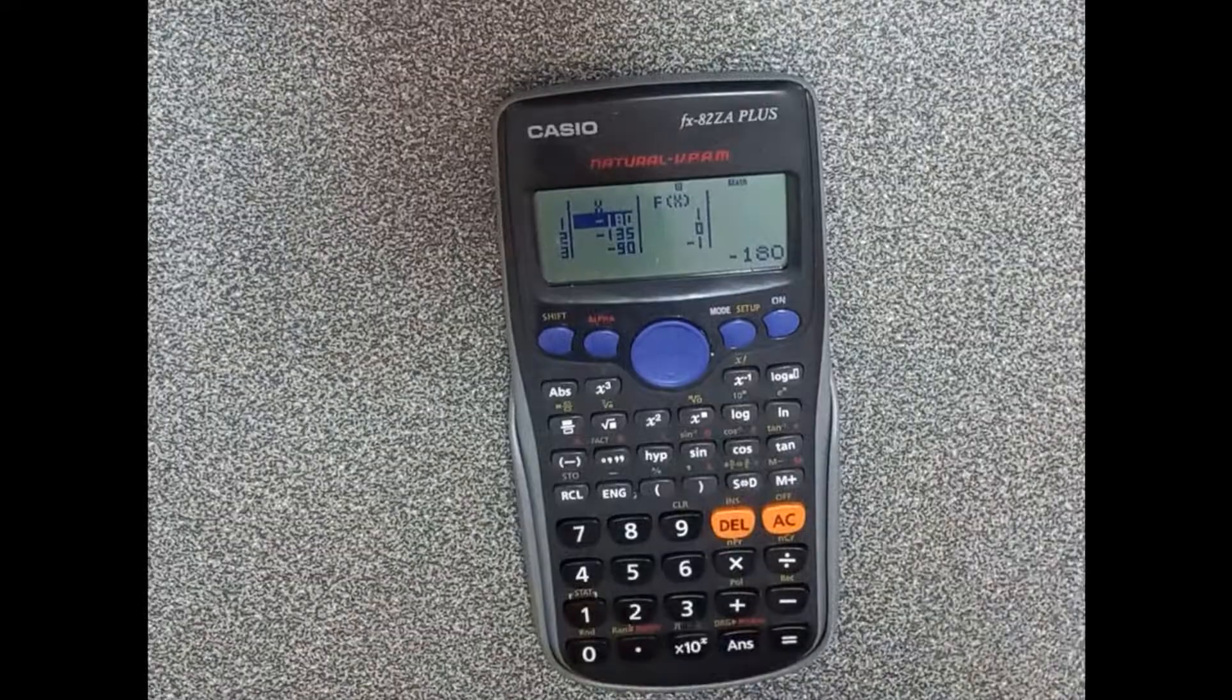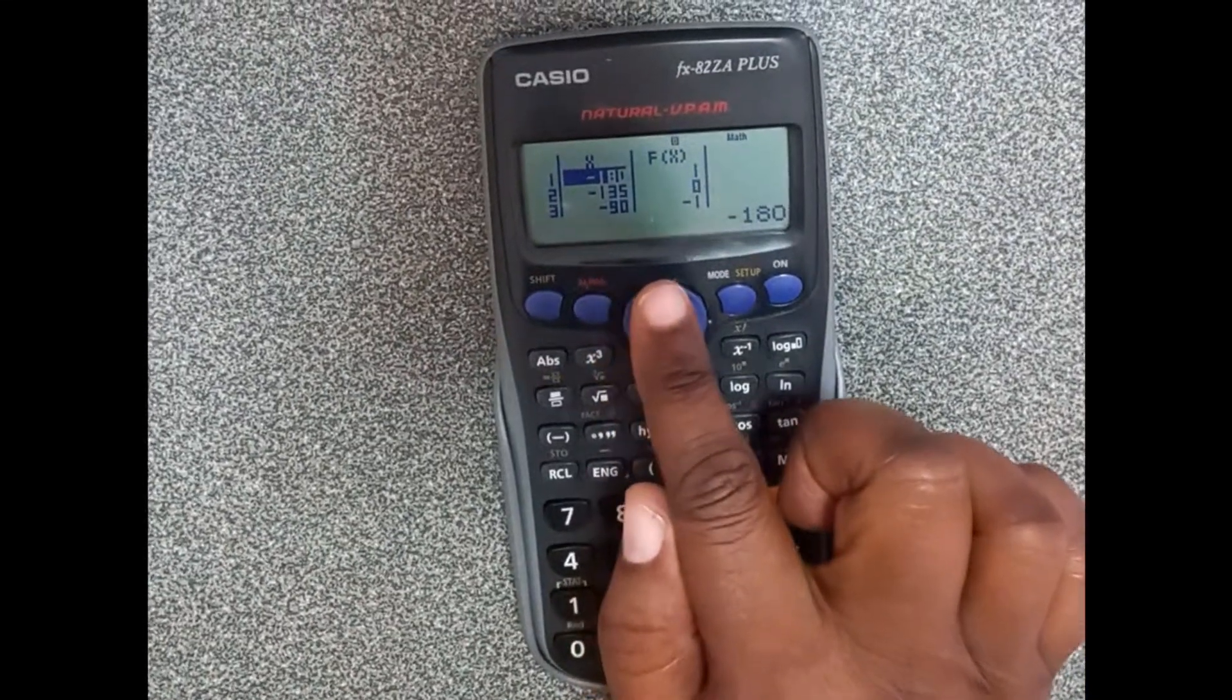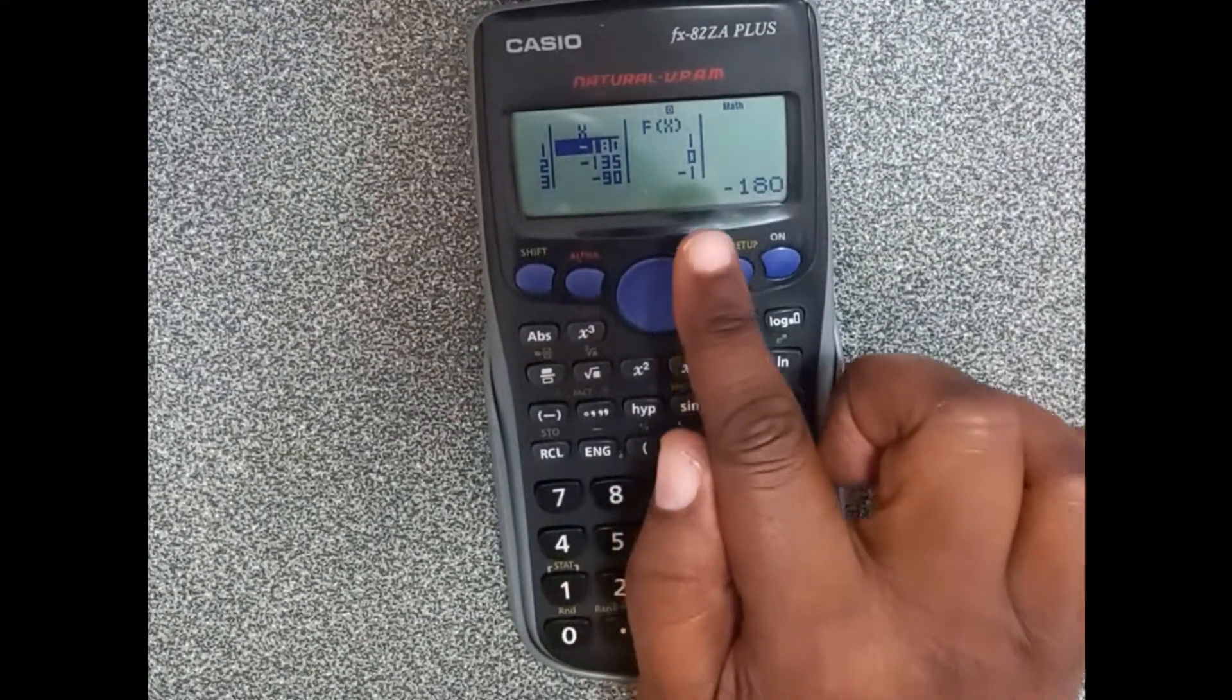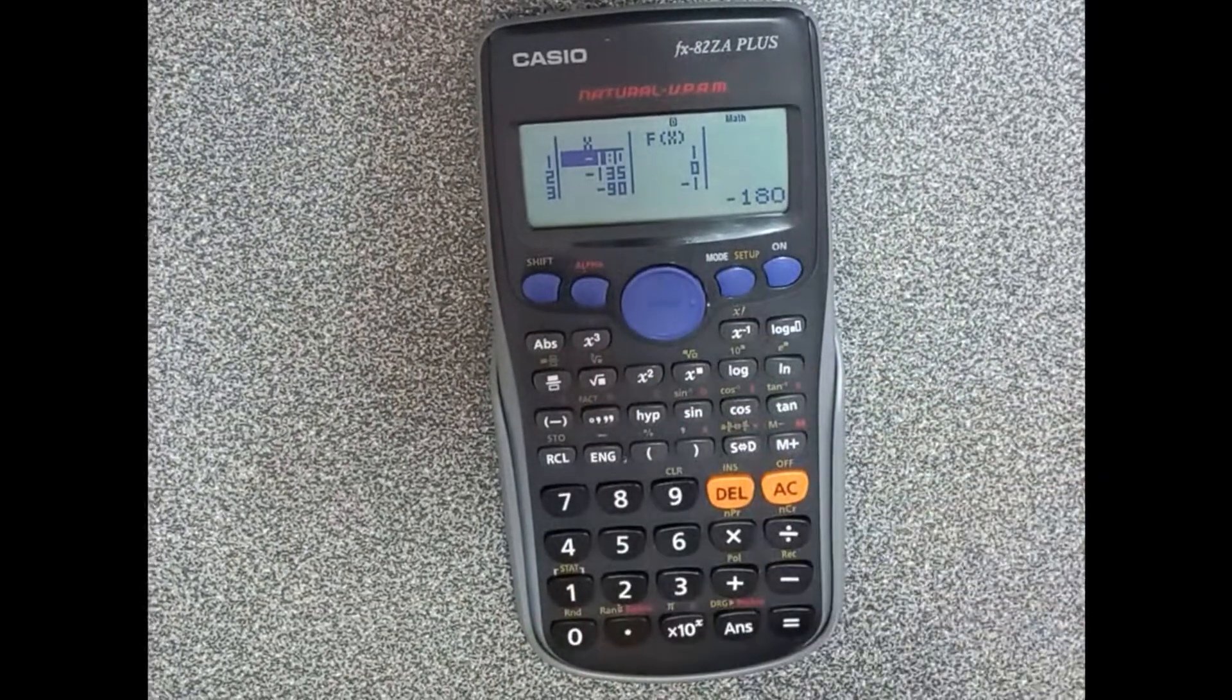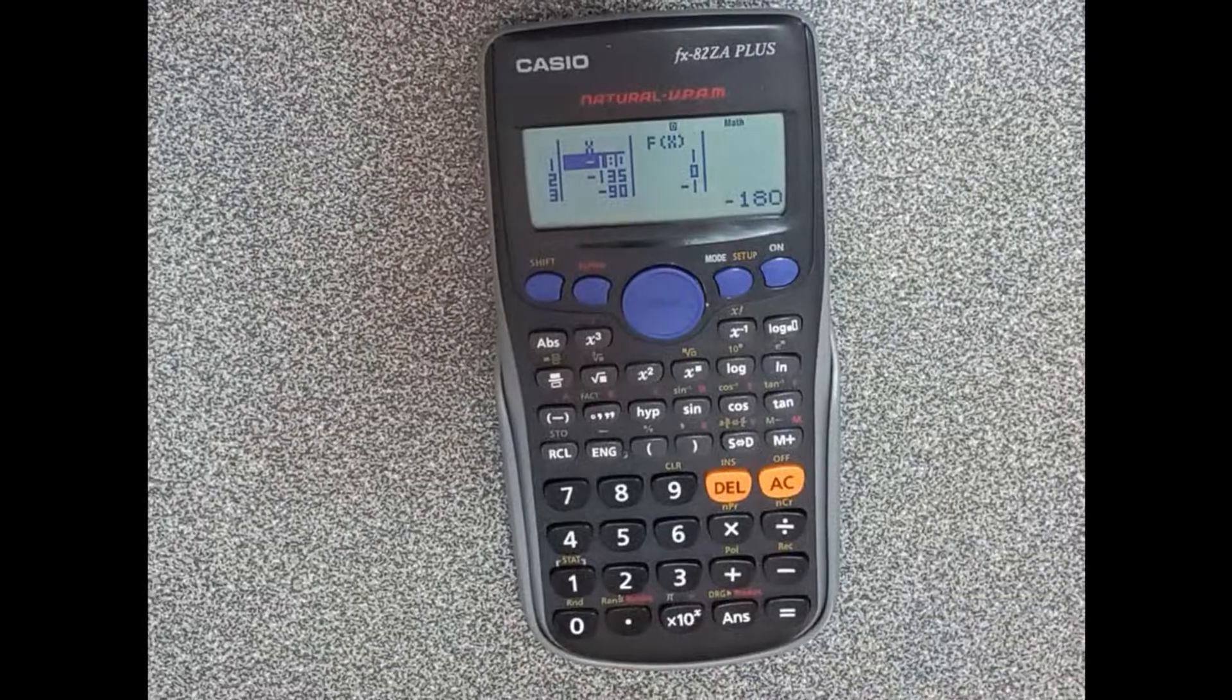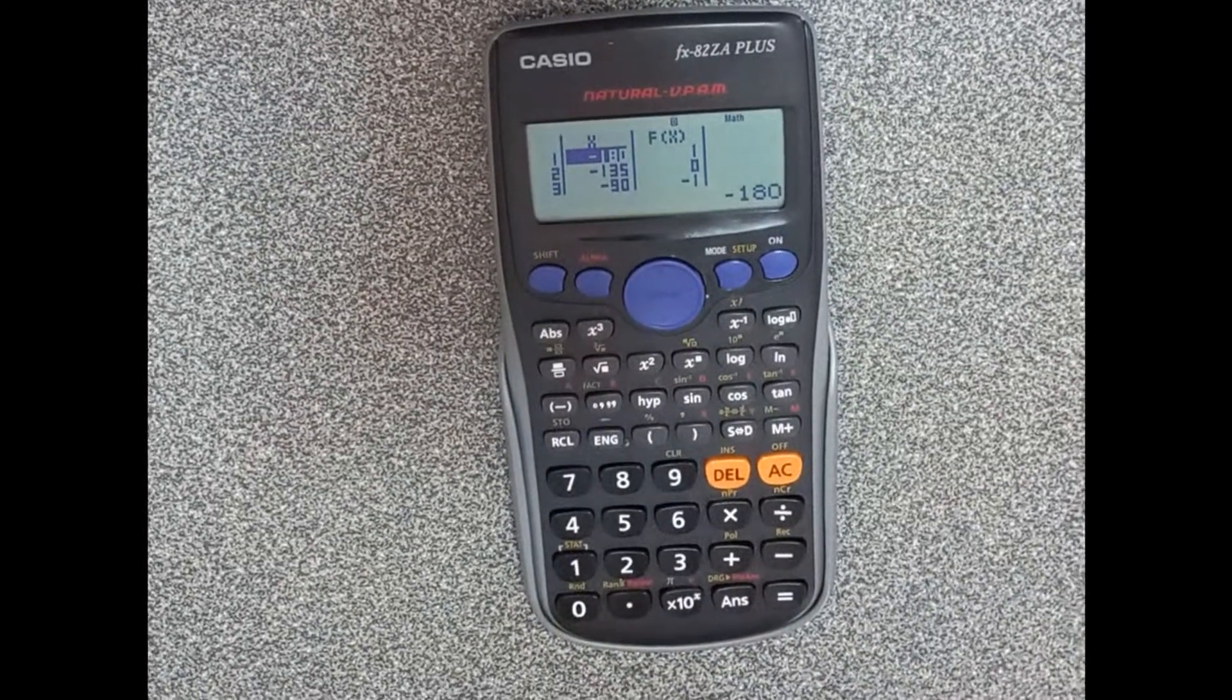Then we get the table. When it's minus 180, your y is 1. Minus 135, your y is 0. Then you take the coordinates and draw the graph.